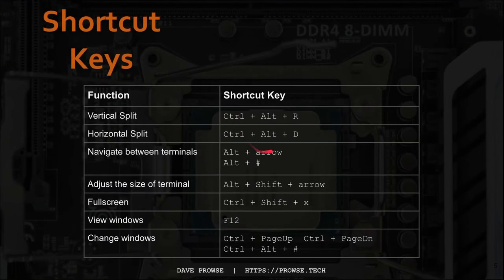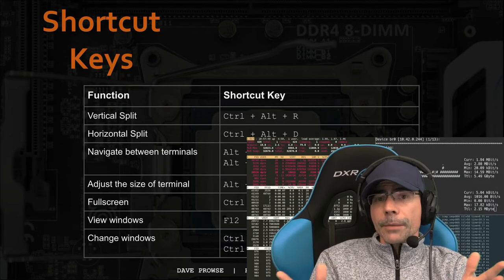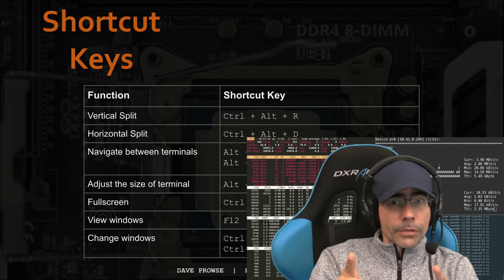Here's a look at the shortcut keys so far. To view your various windows, press F12. To change between windows, use Ctrl+Page Up and Ctrl+Page Down. You can also use Ctrl+Alt plus the number of the window. That's pretty powerful — and there's more.